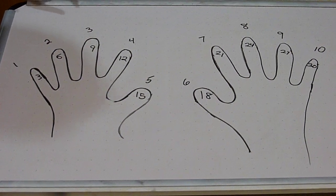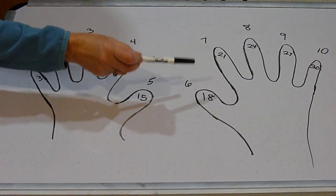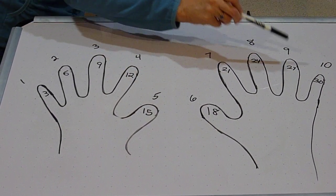I'm going to say it one more time. Three, six, nine, twelve, fifteen, eighteen, twenty-one, twenty-four, twenty-seven, thirty. Twenty-one, twenty-four, twenty-seven, thirty.